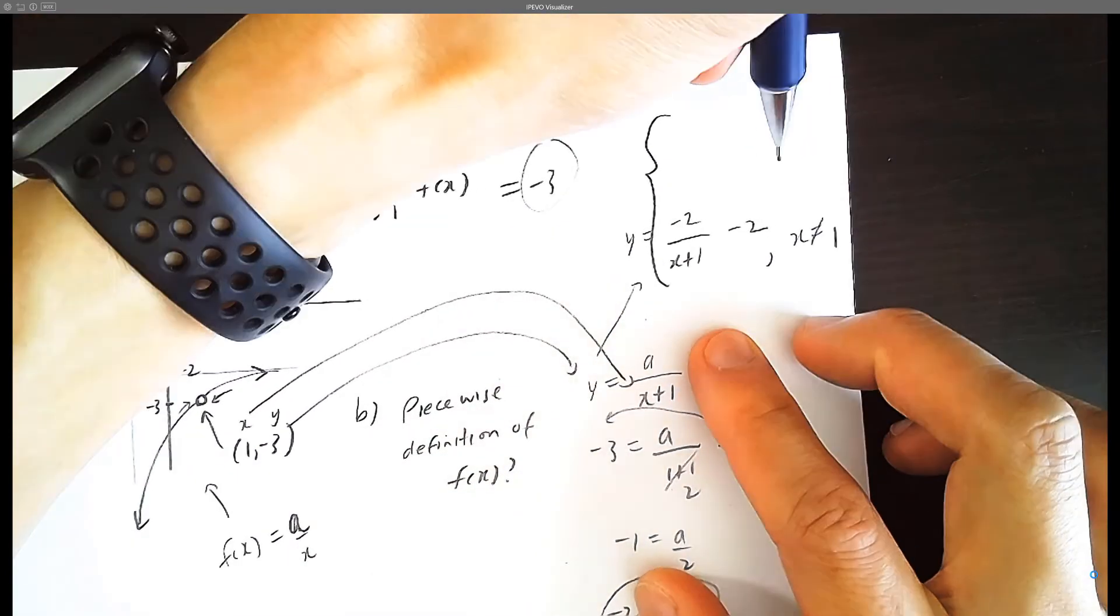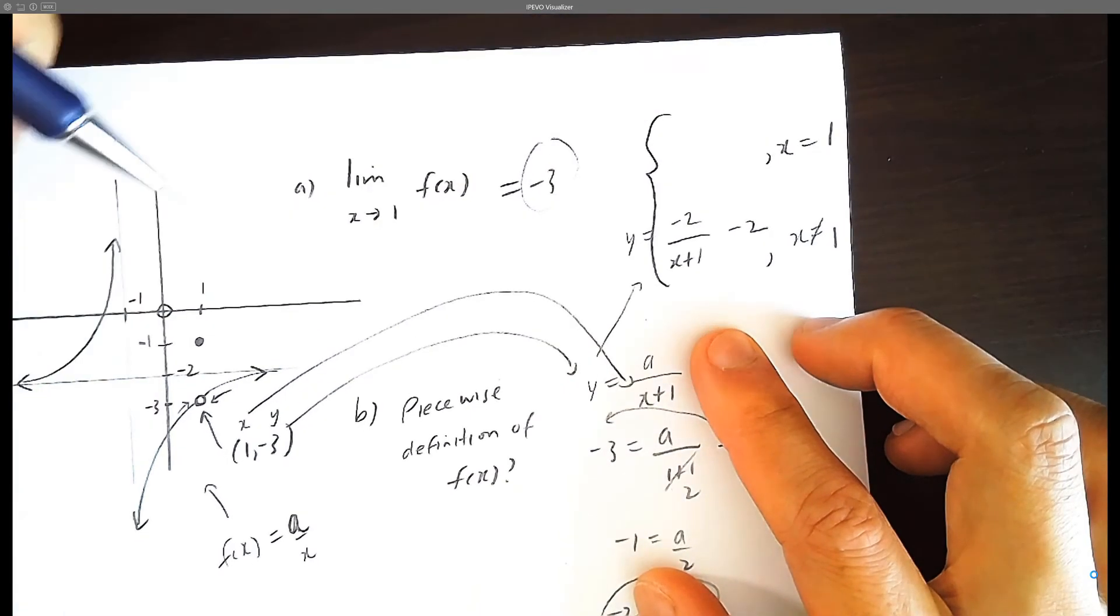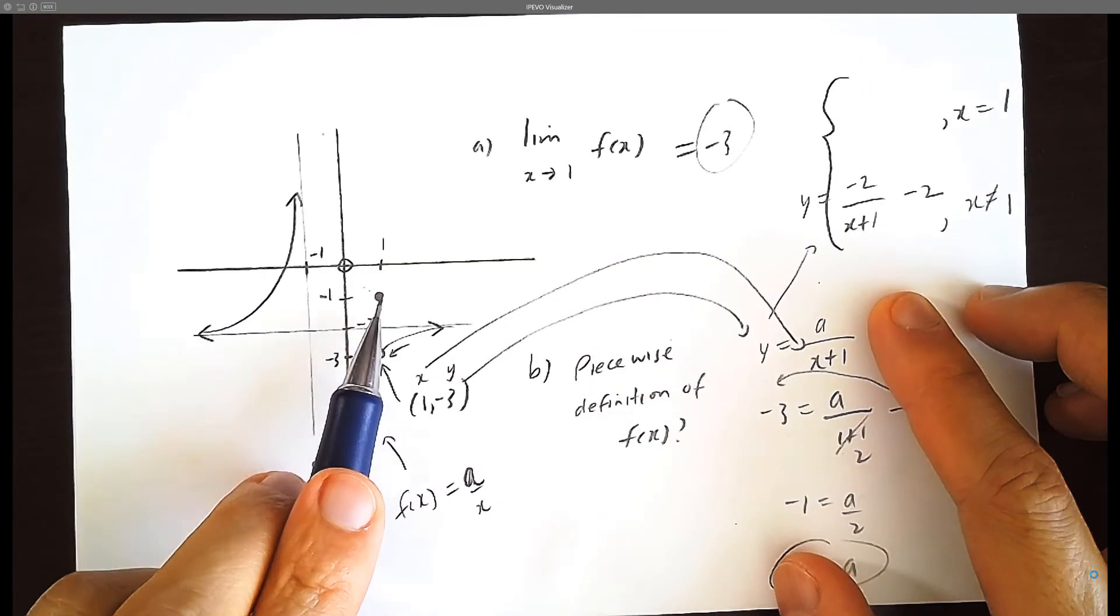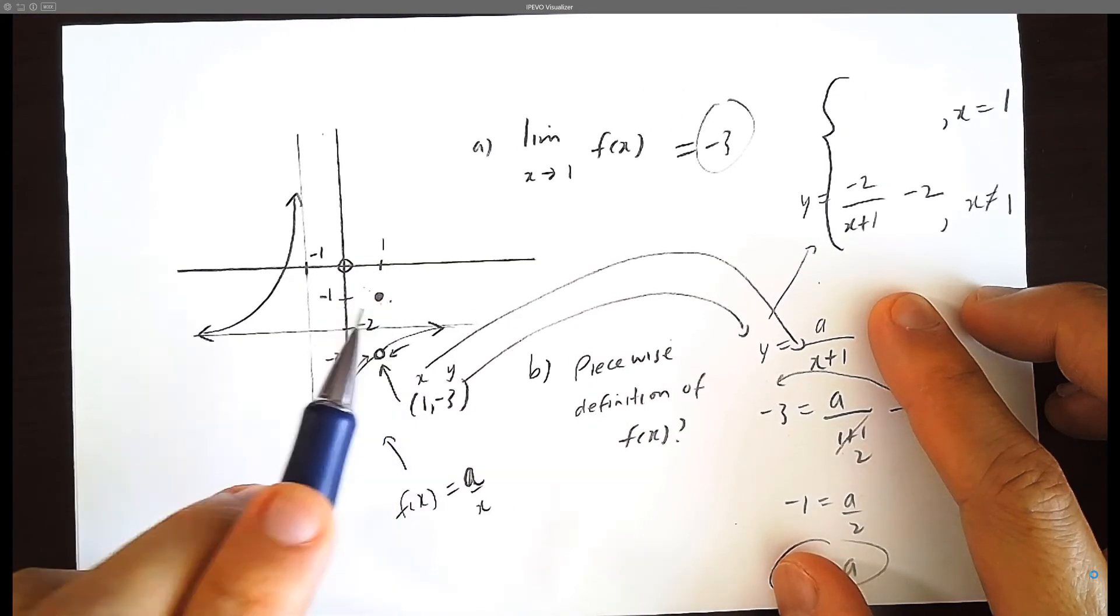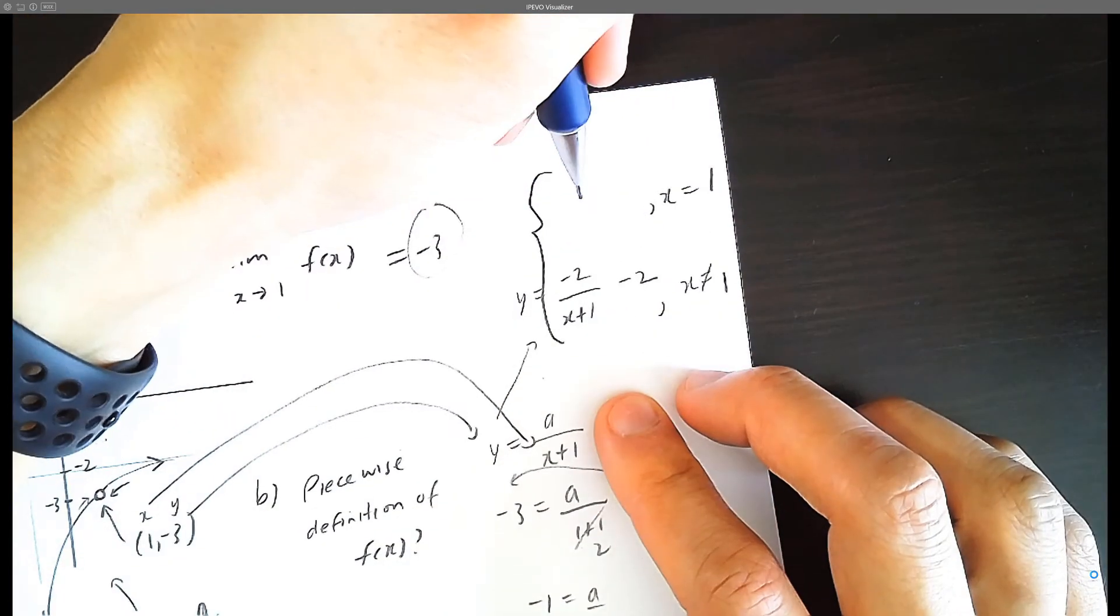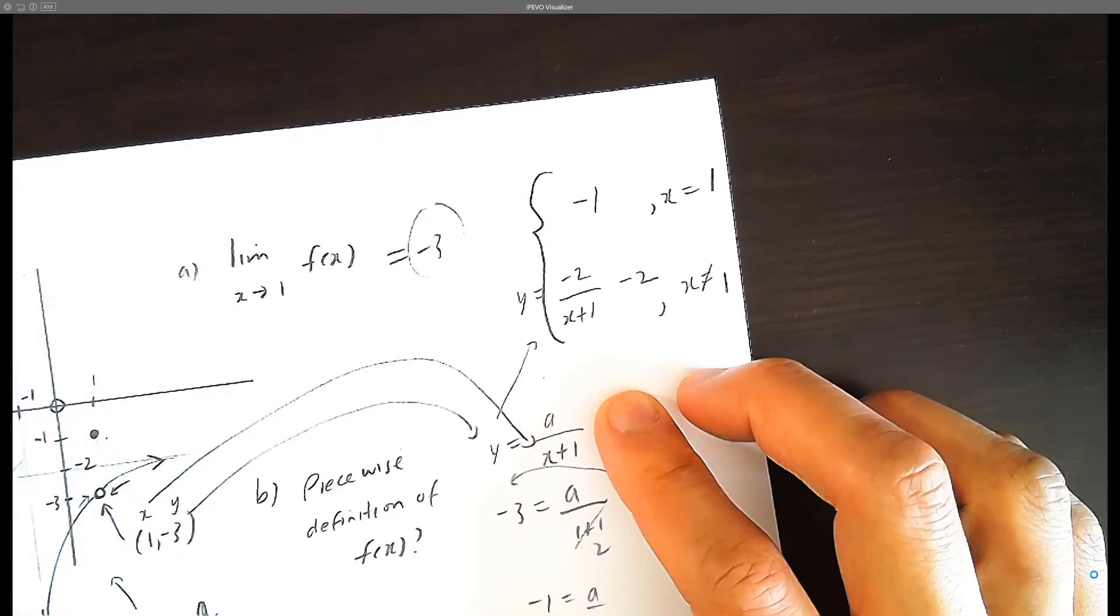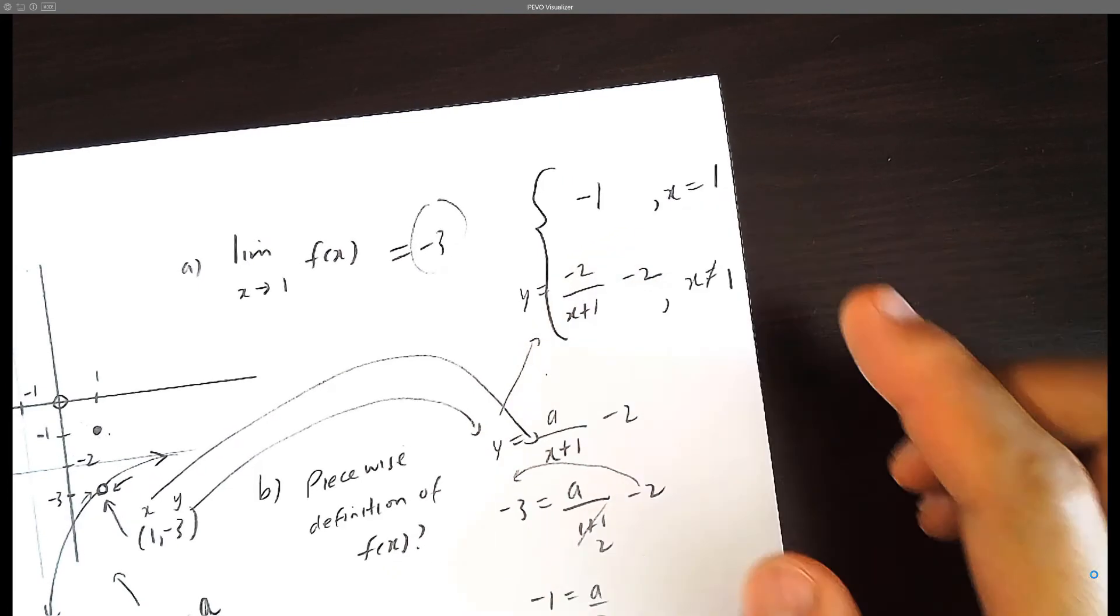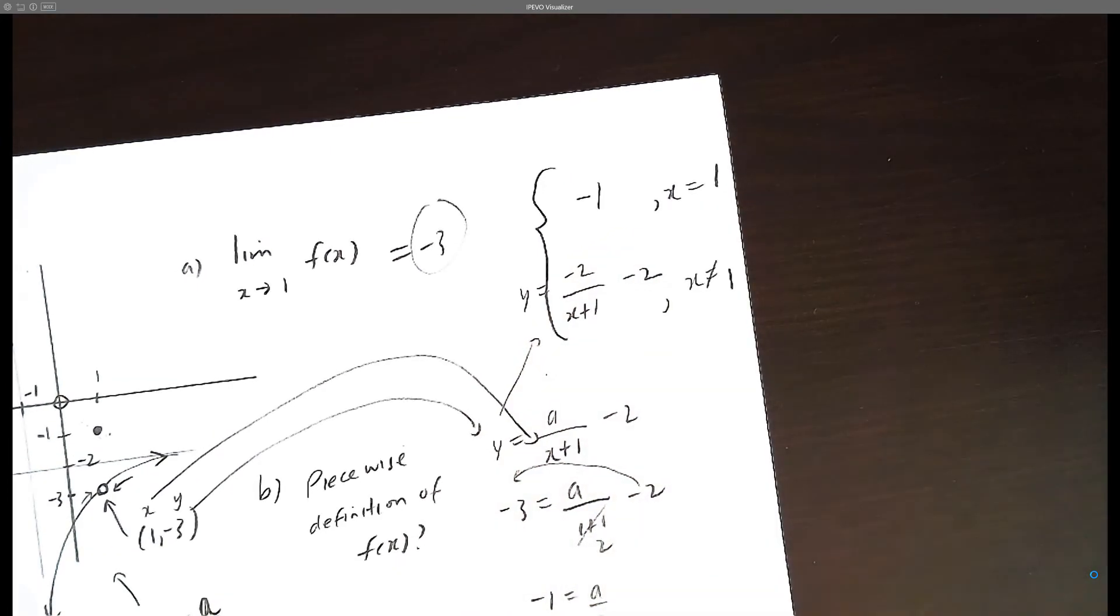Now in the case where x equals 1, we know that we're going to have a dot way up here which is going to be at negative 1. So the y value is going to be negative 1, particularly at x equals 1. So this is just a nice refresher of how piecewise works with rational functions.